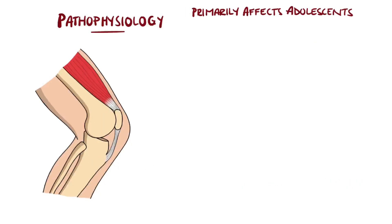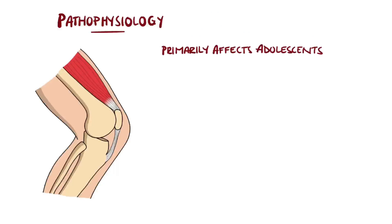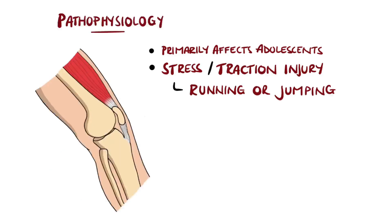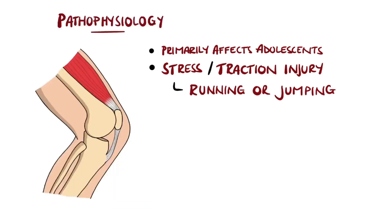Osgood-Schlatter disease is a stress or traction injury that occurs due to repetitive force being applied through the strong patellar tendon onto the tibial tubercle, typically from movements involving leg extension, such as running or jumping, but also during growth spurts.